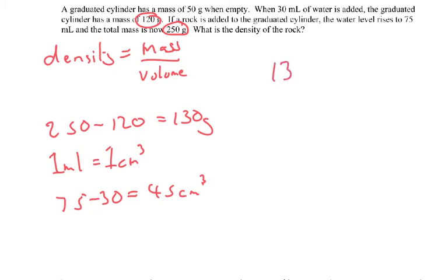OK, so now we've got the mass, 130 grams, divided by the volume, 45 centimetres cubed. And that gives us a final answer of, let me just put this in the calculator, 2.9 grams per centimetre cubed.